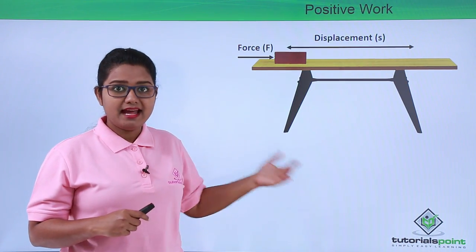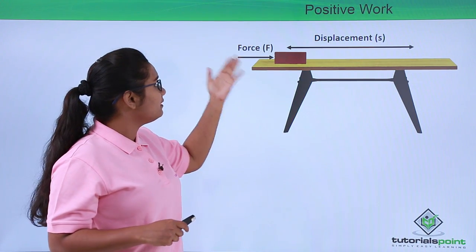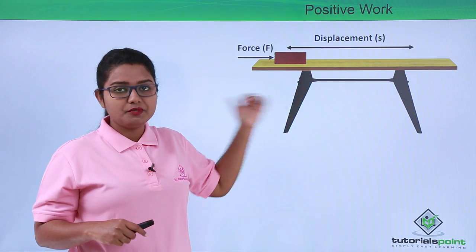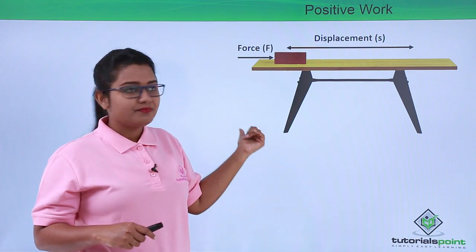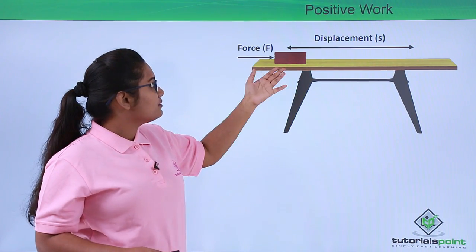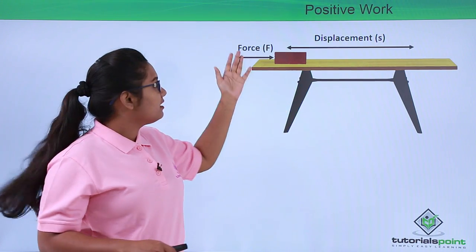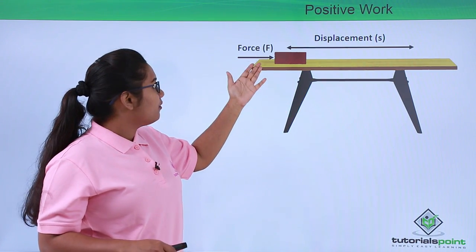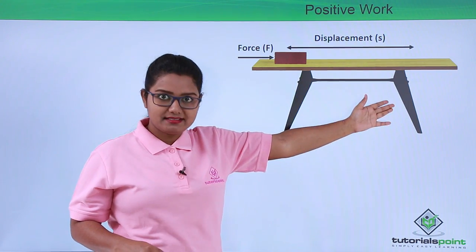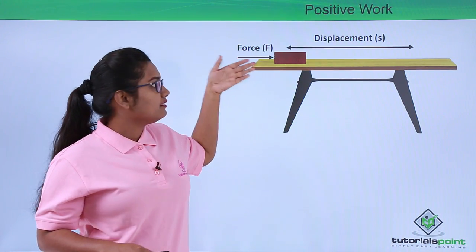This is the case we looked at in the previous video. Here we applied a force on a wooden block placed on a table, and because of this force it has been displaced by a displacement S. We see that both the force and the displacement are in the forward direction.